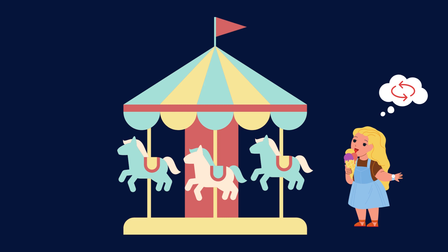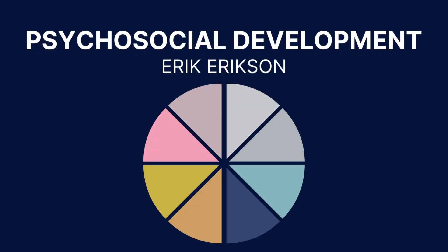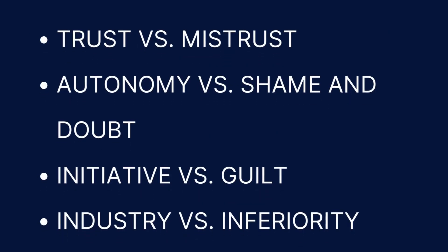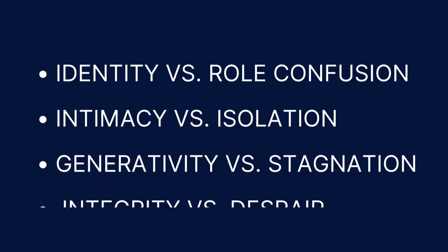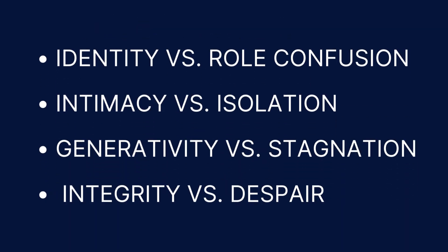Erik Erikson proposed a theory of psychosocial development which suggests that individuals experience eight stages of development through their life. Each stage presents specific challenges that must be overcome to progress to the next stage. These stages include trust vs. mistrust, autonomy vs. shame and doubt, initiative vs. guilt, industry vs. inferiority, identity vs. role confusion, intimacy vs. isolation, and generativity vs. stagnation.